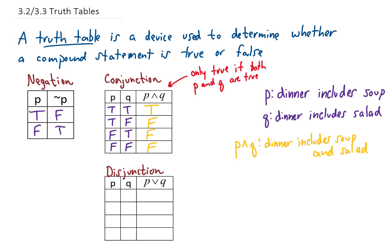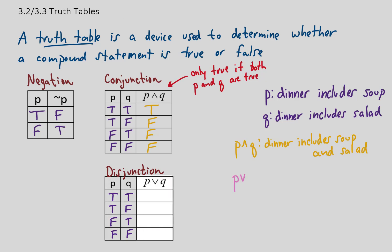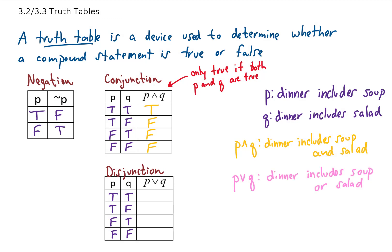Let's now look at the basic truth table for a disjunction. I'm going to fill out all of the possibilities for p and q, and now we want to figure out the truth values for p or q. The statement 'p or q' means 'dinner includes soup or salad.' In the first row, both p and q are true — they bring us both soup and salad. So if the menu says dinner includes soup or salad, have they kept their promise? Yes, they've gone above and beyond.